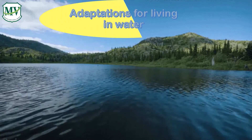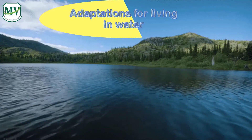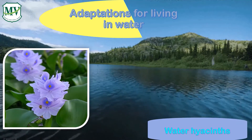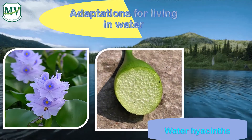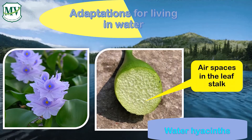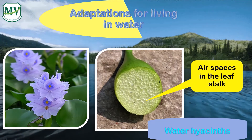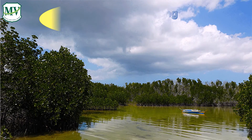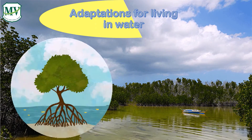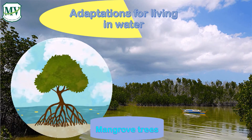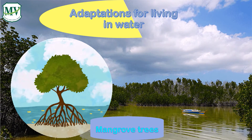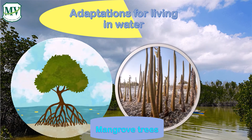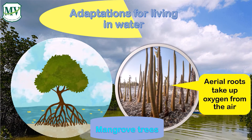Now let's proceed to the second adaptation: for plants living in water. We have water hyacinths. It has spongy leaf stalks that contain air spaces that allow the plant to float. Another example of plants living in water are mangrove trees. Mangrove roots provide support to the mangrove trees to grow on soft mud. That is why it has aerial roots to allow it to get oxygen from the air.